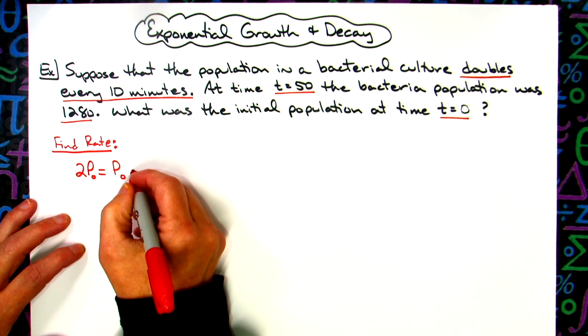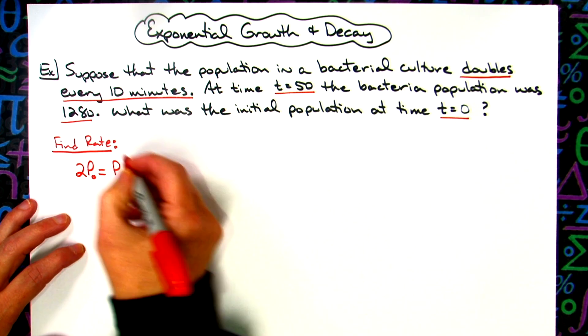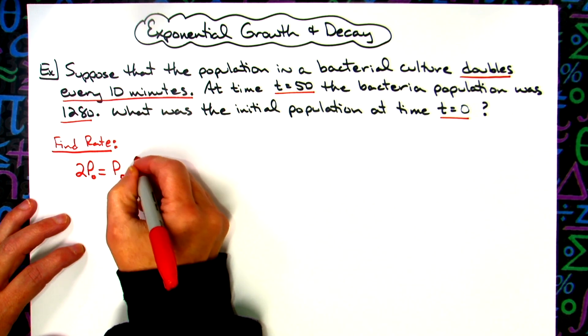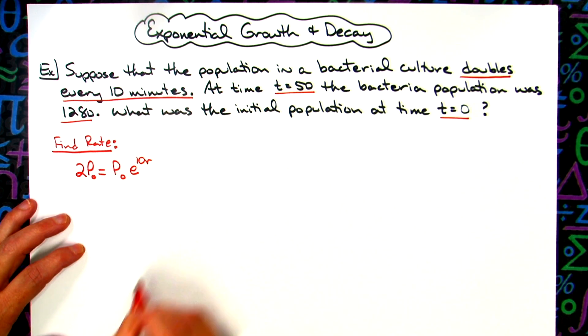Now we're going to go ahead and use PERT formula here. So 2P times e raised to the... it doubled every 10 minutes. So there's your time times your rate.